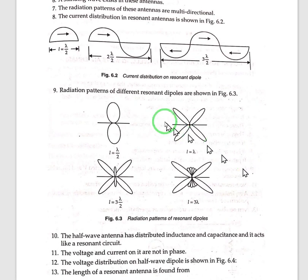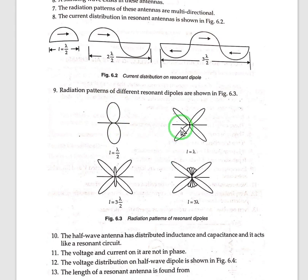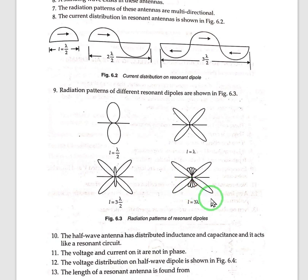The radiation pattern of different resonant dipoles are shown in figure. If it has a length of lambda by 2, if it is a length of lambda, if it is 3 lambda by 2, if it is 3 lambda.